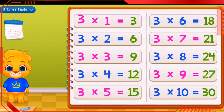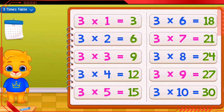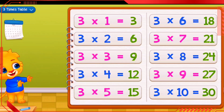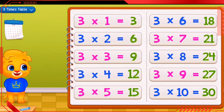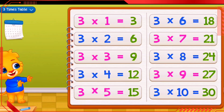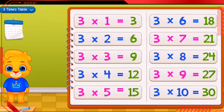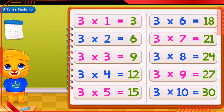3 times 1 equals 3. 3 times 2 equals 6. 3 times 3 equals 9. 3 times 4 equals 12. 3 times 5 equals 15. 3 times 6 equals 18.